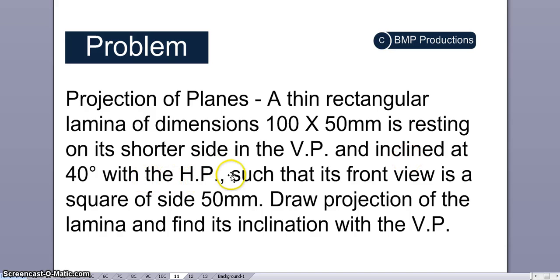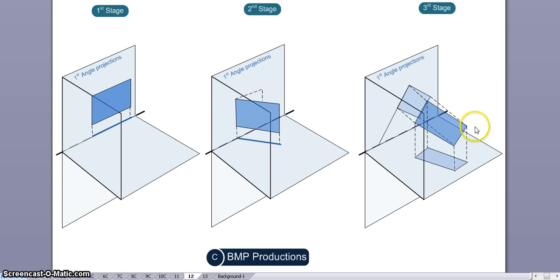such that its front view is a square of side 50 mm. Draw the projection of the lamina and find its inclination with the vertical plane. Okay, so that's the problem statement.